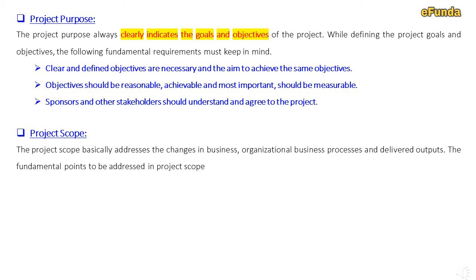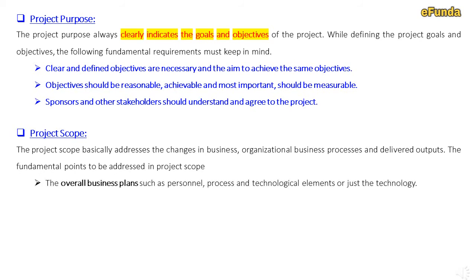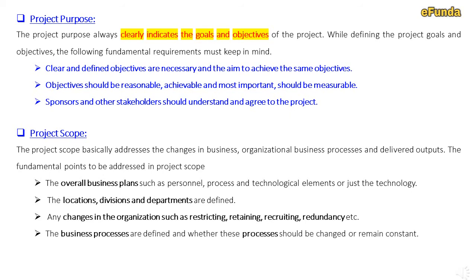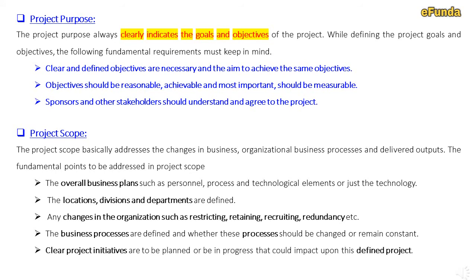Project scope: the project scope basically addresses changes in business organizational processes and delivered output. The fundamental points to be addressed in the project scope are: the overall business plan such as personnel, process, and technological elements or just the technology; the locations, divisions, and departments to be defined; any changes in the organization such as restructuring, retraining, recruiting, and redundancy; whether business processes should be changed or remain constant; and clear project initiatives are to be planned or in progress that could impact the defined project. This is why project scope and its definitions are very critical.